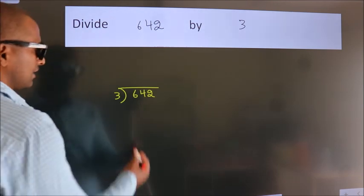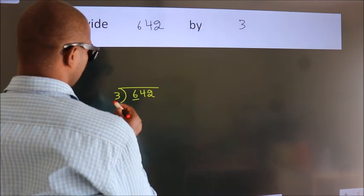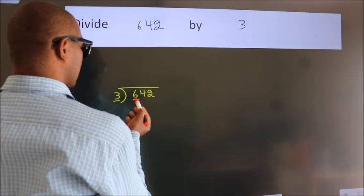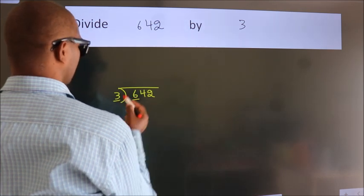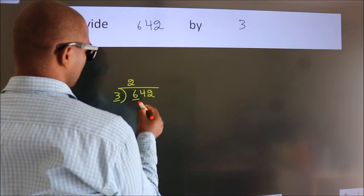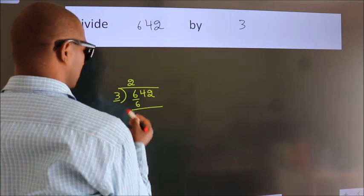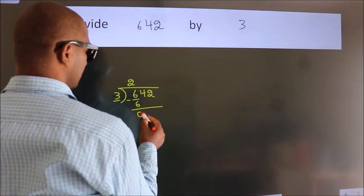Here we have 6. Here 3. When do we get 6 in the 3 table? 3 times 2 equals 6. Now, we should subtract. We get 0.